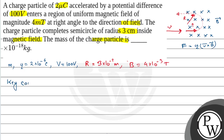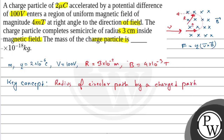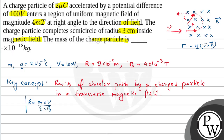The key concept is: the radius of a circular path by a charged particle in a transverse magnetic field. The radius is equal to mv divided by qB — that is, mass into velocity of the charged particle, divided by charge of the particle into magnitude of the magnetic field.